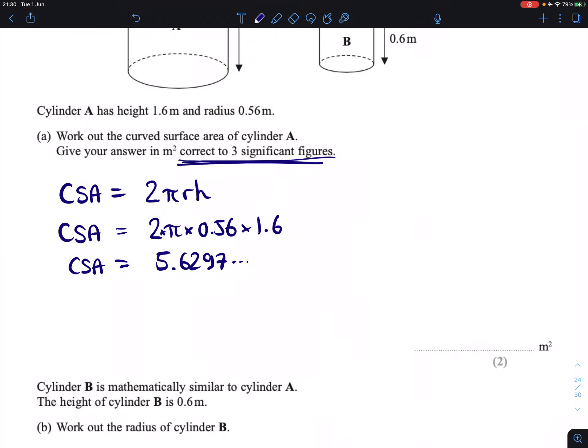Because we're rounding it to three significant figures, we're going to be rounding there, which gives us a final answer of 5.63. Next part.